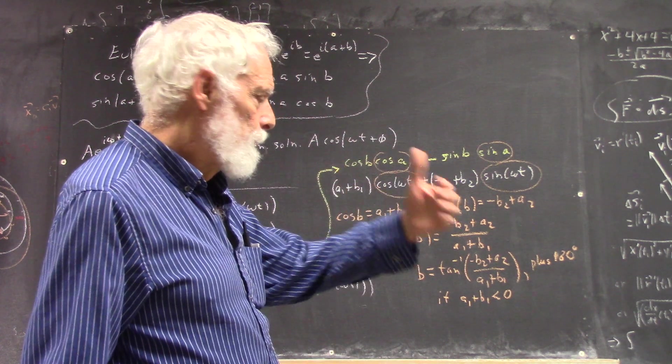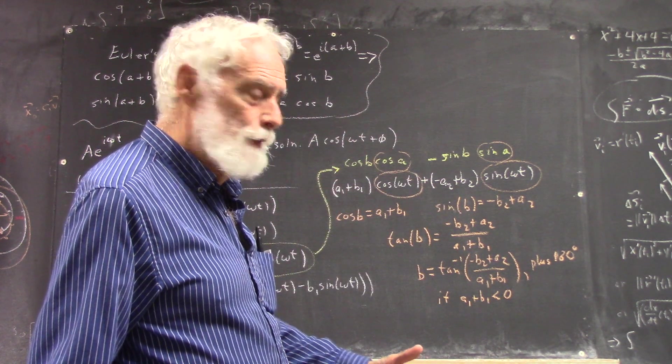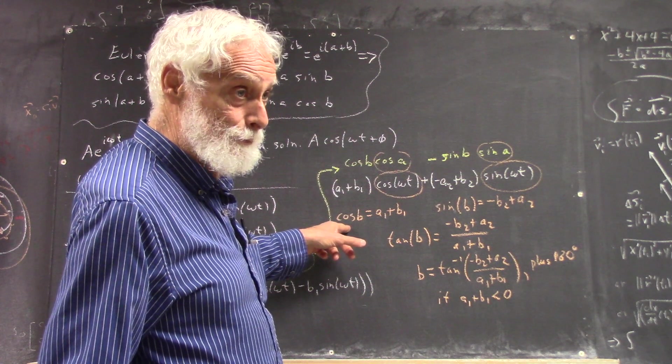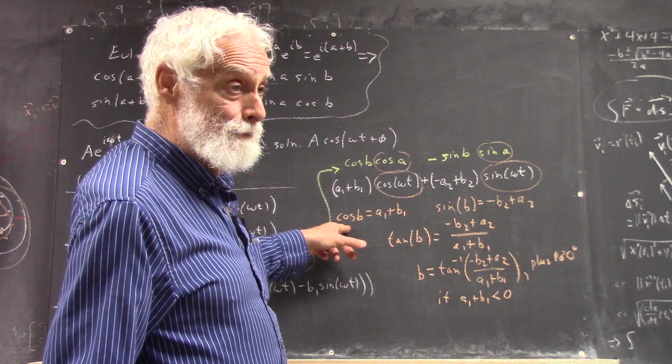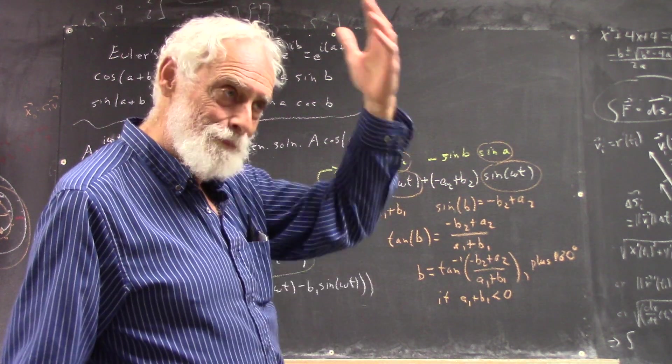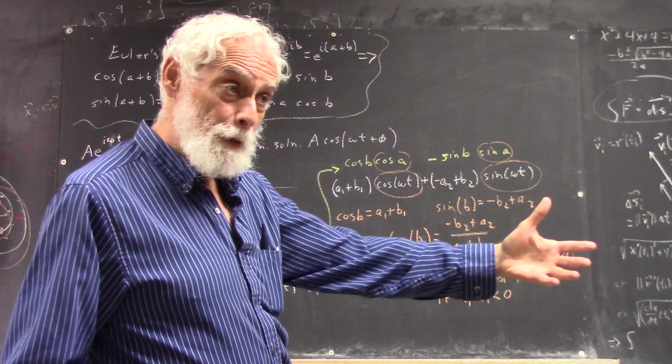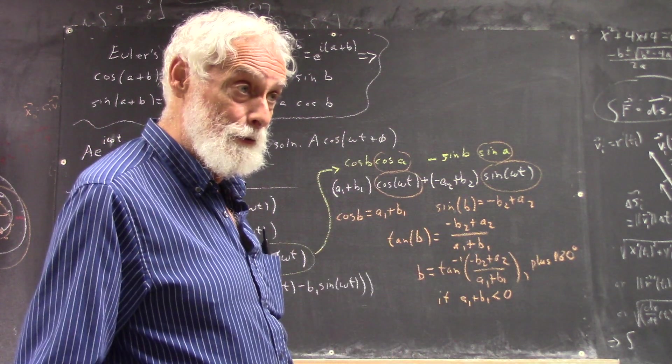So the arctangent is always going to be an angle whose cosine is positive, because, again, to the right of the y-axis, the cosine is positive, the tangent is positive.